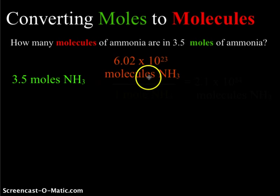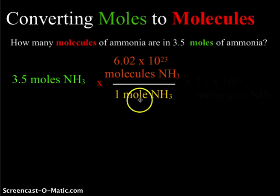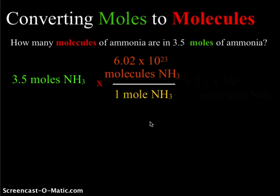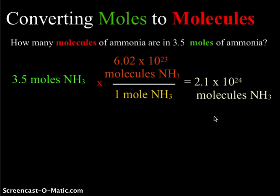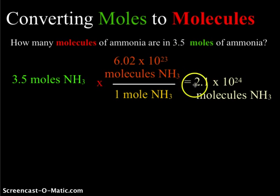We multiply by Avogadro's number — 6.02×10²³ molecules — since we want molecules as our final answer, and divide by one mole to cancel the mole unit. One mole always equals 6.02×10²³ molecules. Multiplying 3.5 by 6.02×10²³ and dividing by one gives 2.1×10²⁴ molecules of NH₃. The full calculation gives 2.107, but we round to two significant digits because 3.5 has two significant figures.